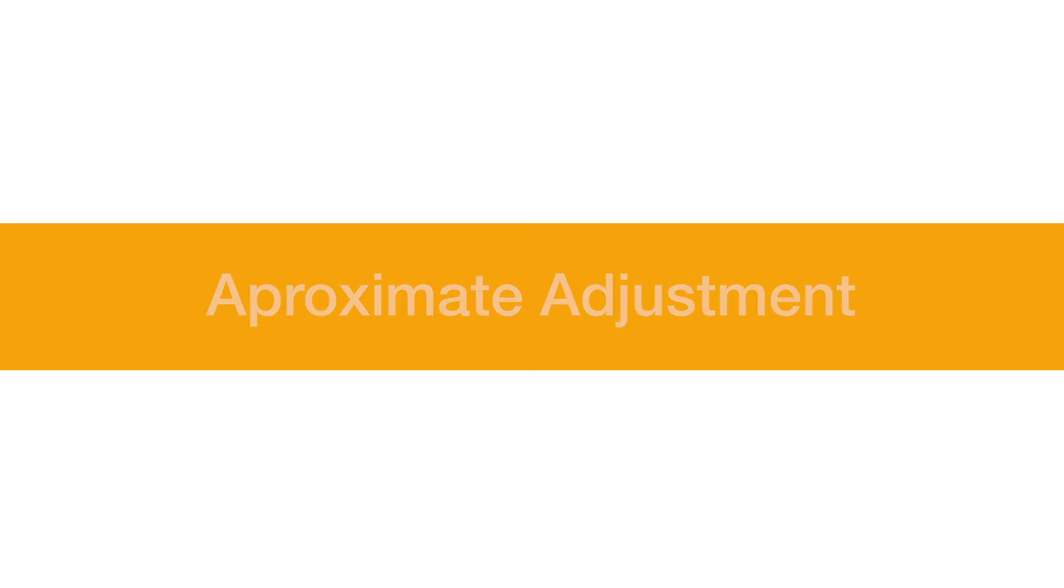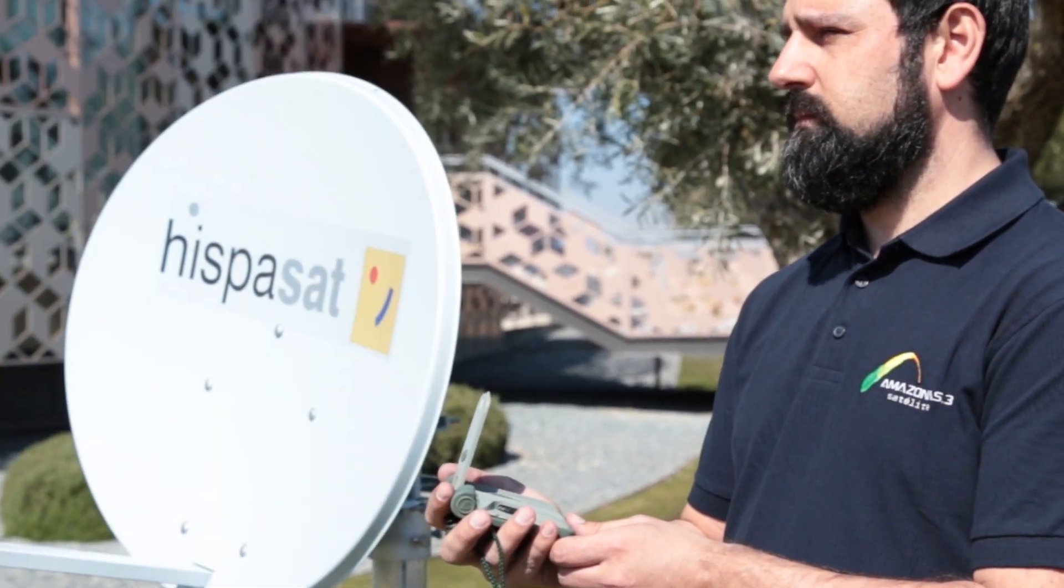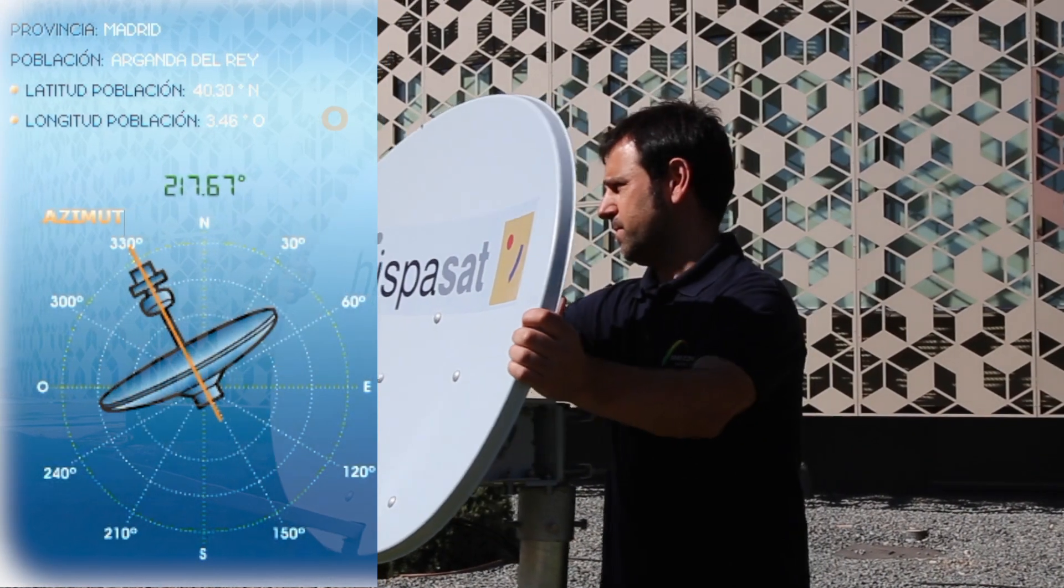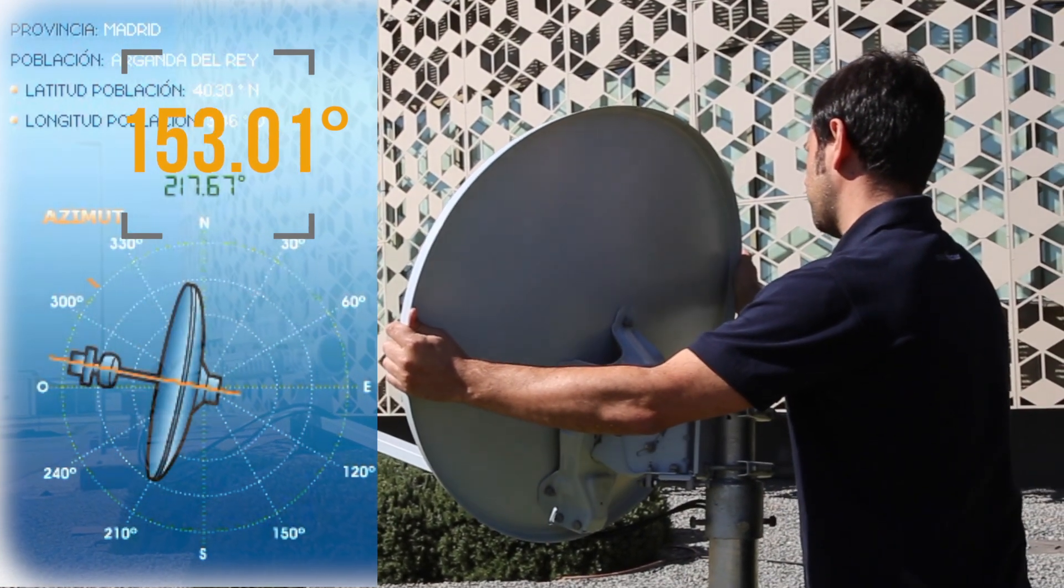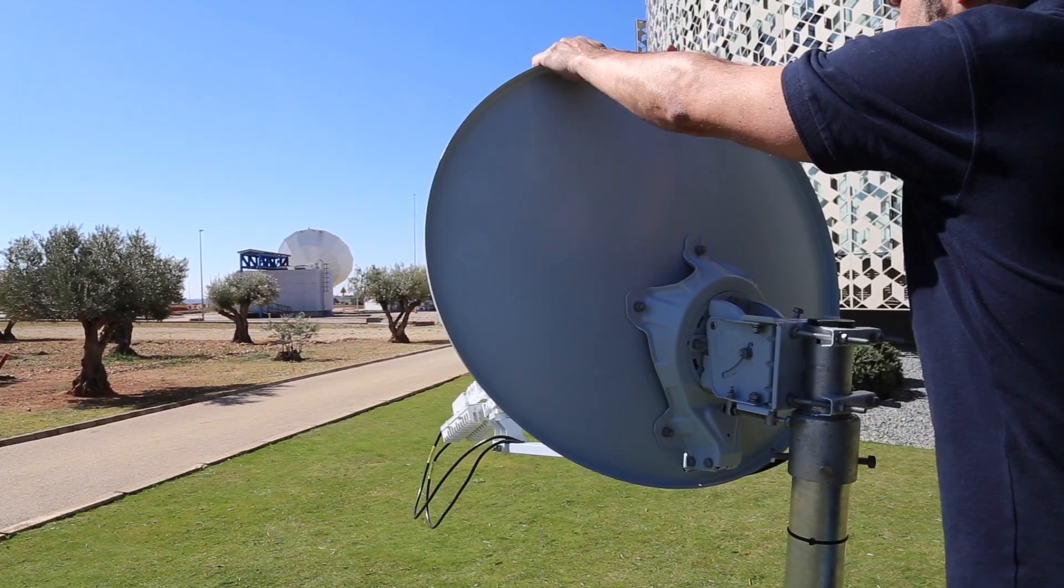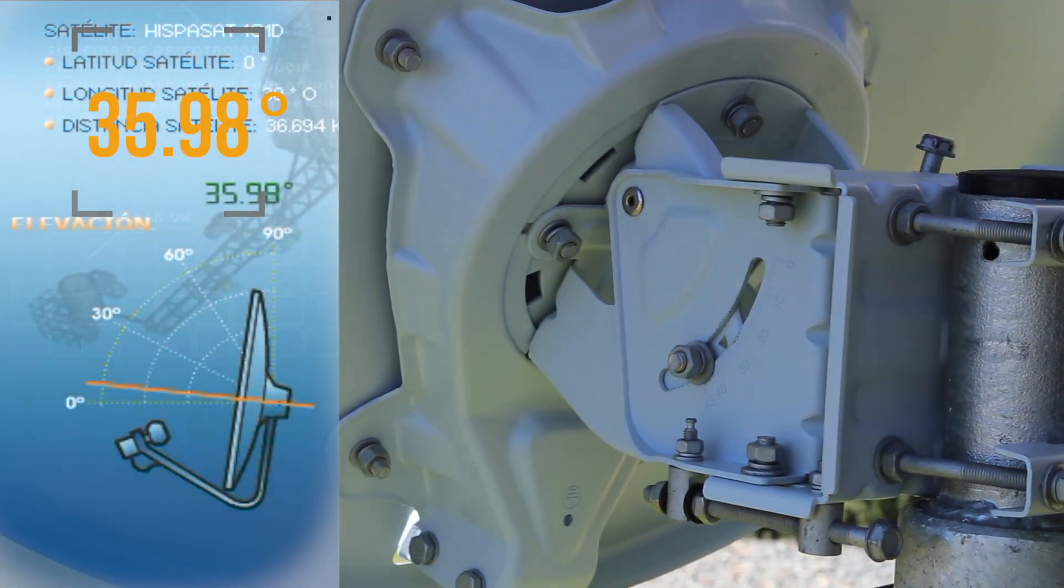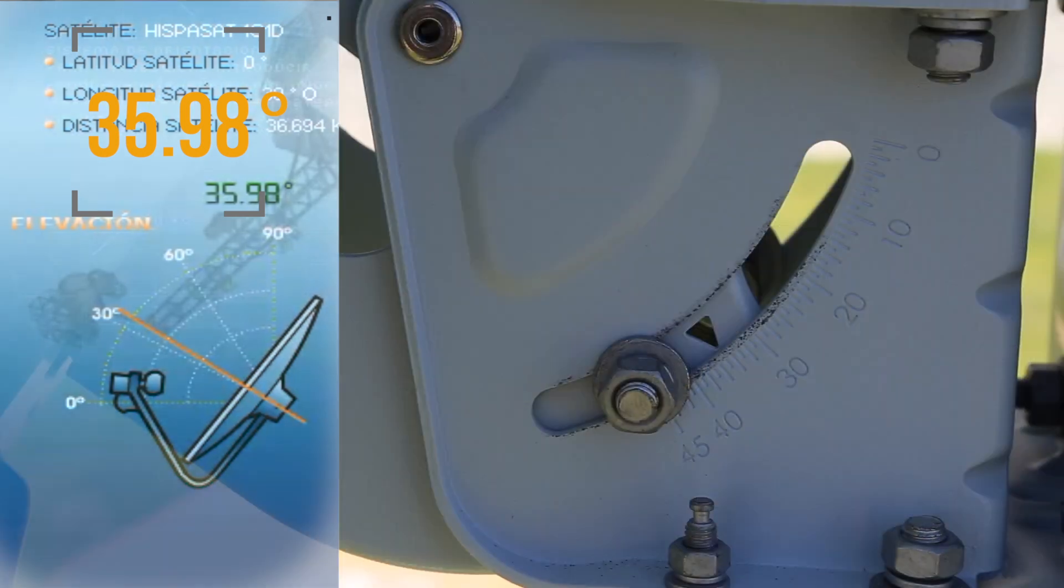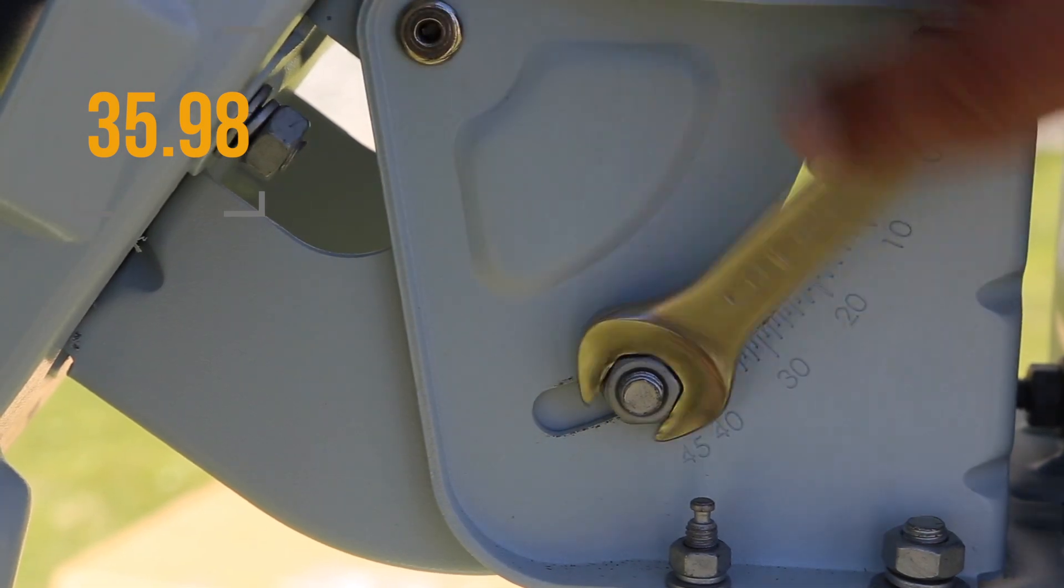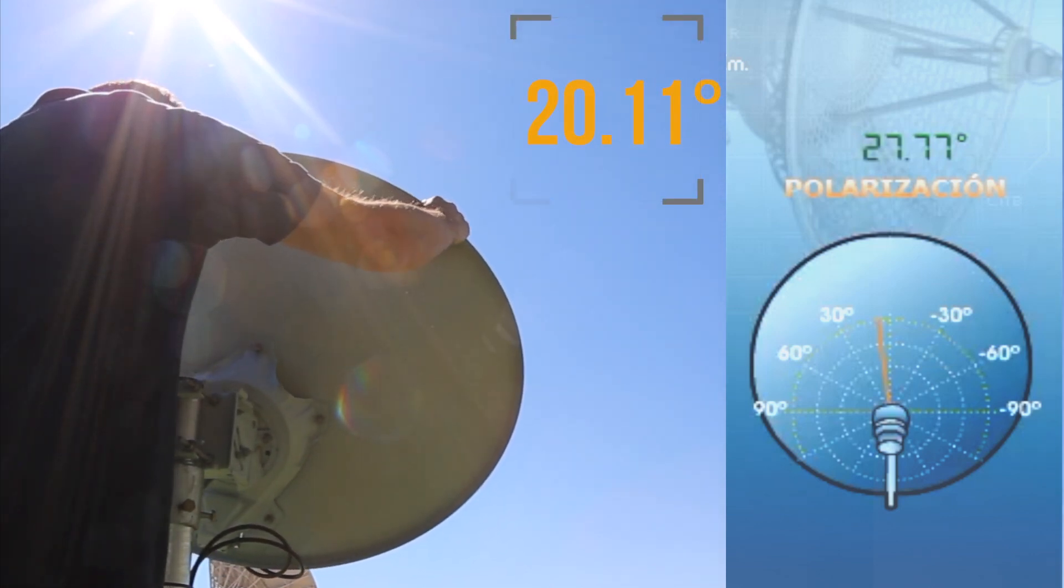Approximate adjustment. For the approximate adjustment of the Azimuth, you can use the compass to find the orientation: 217.67 degrees if we use the example of Madrid. Rotate the whole block until the best point for the approximate orientation is reached. For the approximate adjustment of the elevation, you must raise or lower the antenna until the notch that is below the nut is placed at the elevation obtained based on our GPS position. Finally, in order to adjust the polarization, rotate the reflector until it is placed in the correct position.